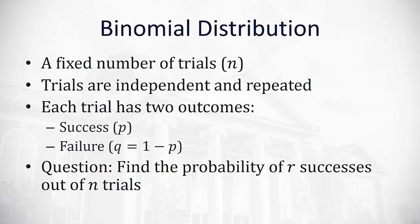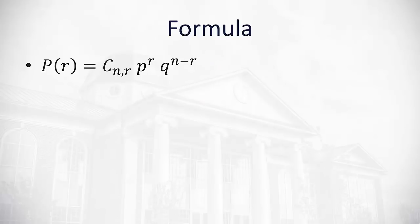Maybe I want to be successful 4 out of 10 times. The formula we use to calculate a binomial is: the probability that we get r successes is a combination, n choose r, times the probability of success raised to the r power — that gives us the number of successes — times the probability of failure raised to the n minus r power, which gives us the number of failures.